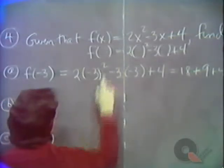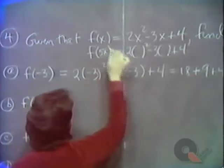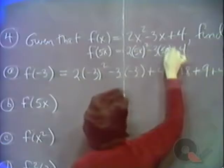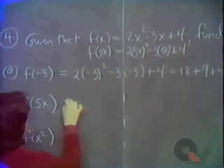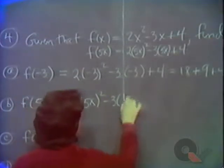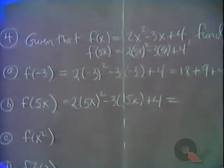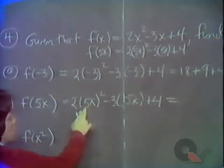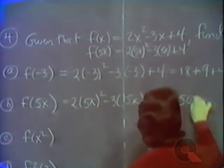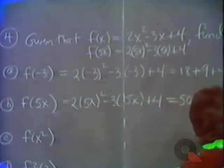f of 5x would be 2 times 5x squared minus 3 times 5x plus 4. The quantity 5x squared is going to be 25x squared times 2, that's 50x squared minus 15x plus 4.